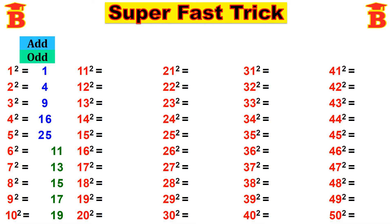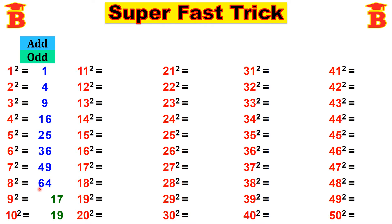This 25 add with next number: 25 plus 11 gives 36. This 36 add with next number: 36 plus 13 gives 49. This 49 add with next number: 49 plus 15 gives 64. This 64 add with next number: 64 plus 17 gives 81. This 81 add with next number: 81 plus 19 gives 100.